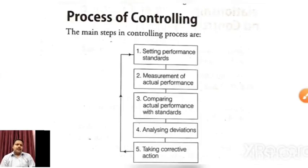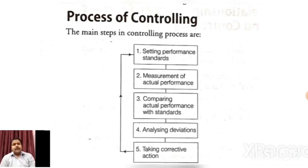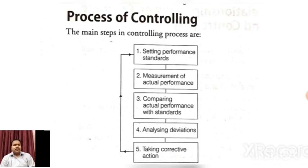So the next topic is: process of controlling. You know आपने planning chapter पढ़ा है, organizing पढ़ा है, staffing पढ़ा है — इन सब का अपना एक process होता है। Planning में कुछ steps होते हैं, organizing में होते हैं, staffing में elements होते हैं — recruitment, selection, training। Directing में भी elements हैं — supervision, motivation, leadership और communication। उसी तरह से management का जो last function है — controlling — उसका भी एक process है, कुछ steps हैं जिनको हम conduct करके controlling establish करने की कोशिश करते हैं।